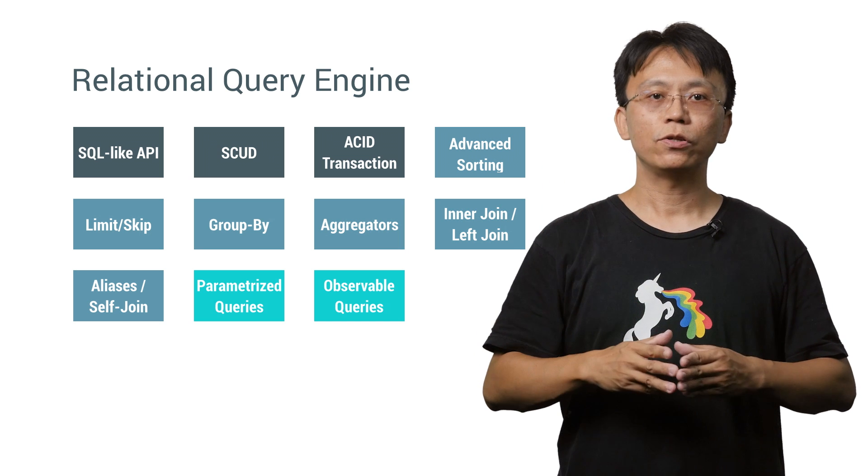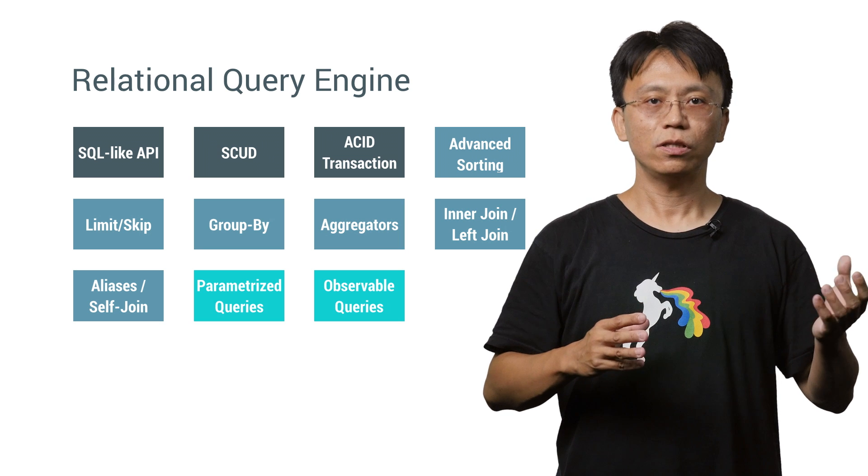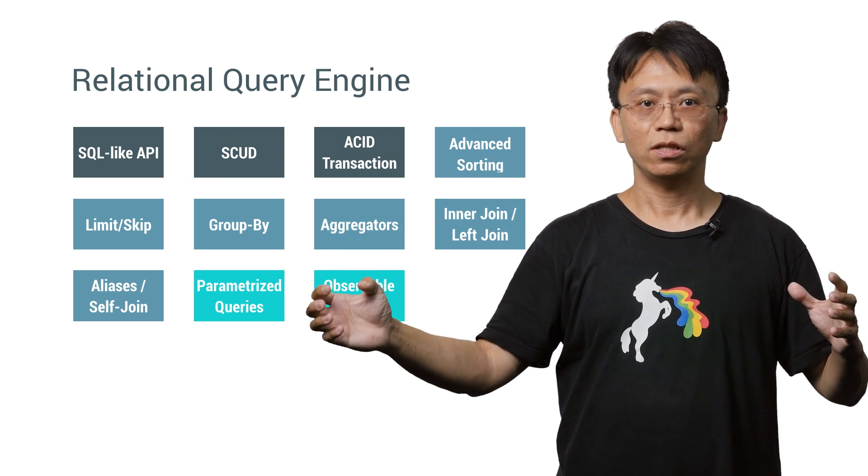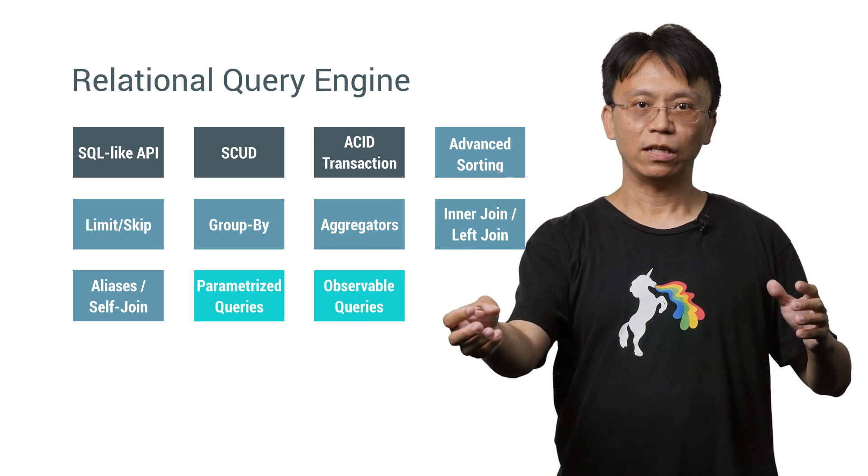One super cool feature that Lovefield has is the observable query. Lovefield allows observation of the results of a select query. Say another asynchronous function in the code updates table contents, or the values of the parameterized query bindings change.